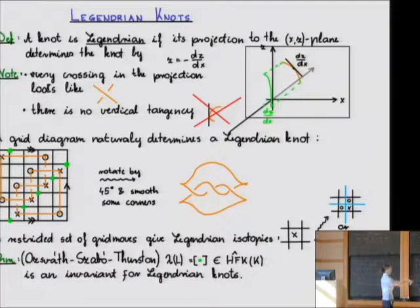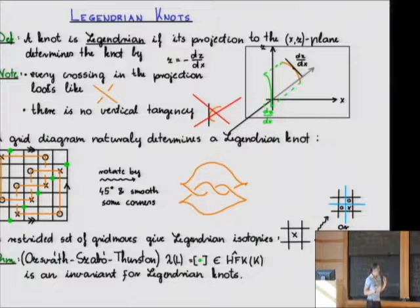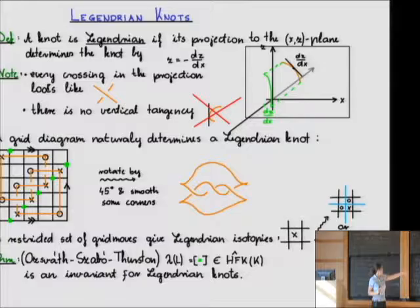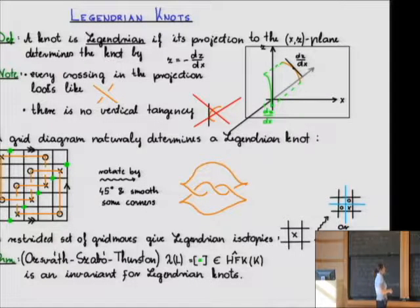Instead of vertical tangencies you get those kinds of cusps visible in the other picture. Because we always wanted the horizontal lines to go over the vertical lines in grid diagrams, there was already a special structure on the grids. Whenever you have a grid diagram, it naturally gives you a Legendrian knot: you rotate the whole picture 45 degrees and smooth out the upper-left and lower-right corners.